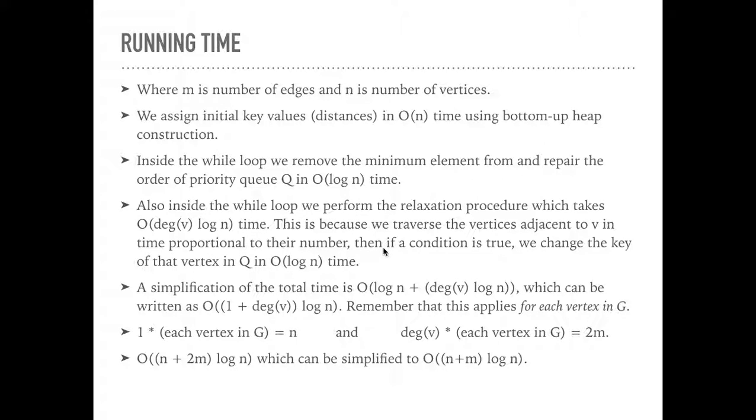Then if a condition is true, if that distance was less than the one it already had, we're going to change the key of that vertex in queue in O(log n) time. Similarly to how it took log n time to remove min from that queue, because it's heap based. If we change the key here, so update the distance to the shorter path distance, it's going to take log n time, because we're going to have to restructure that heap. So that's log n time for that. So a simplification of the total time so far is O(log n + degree v log n).